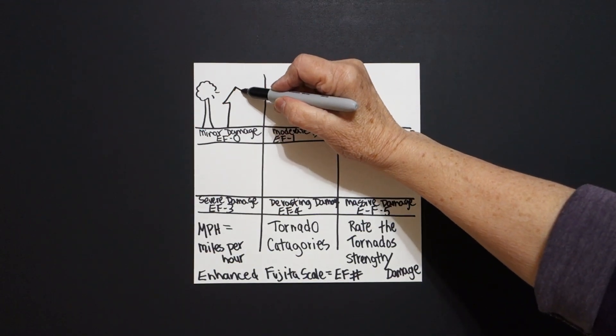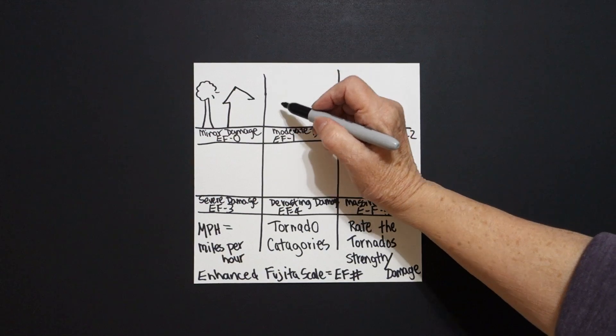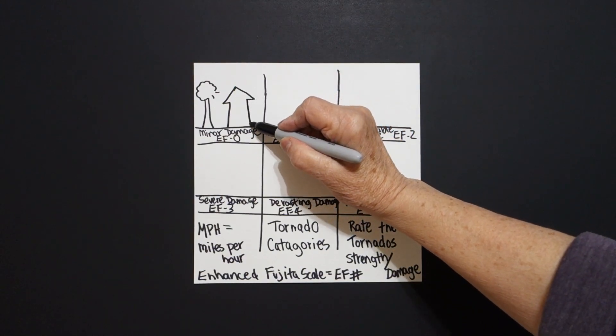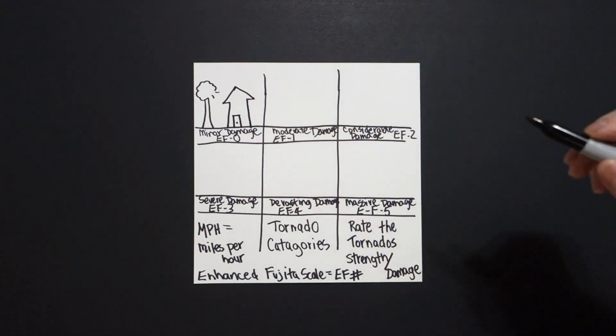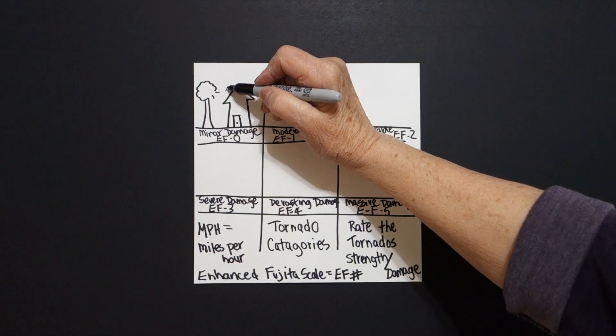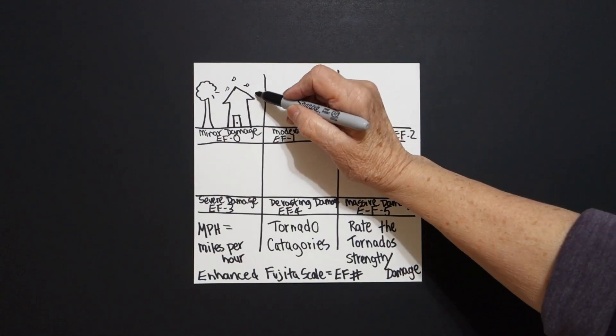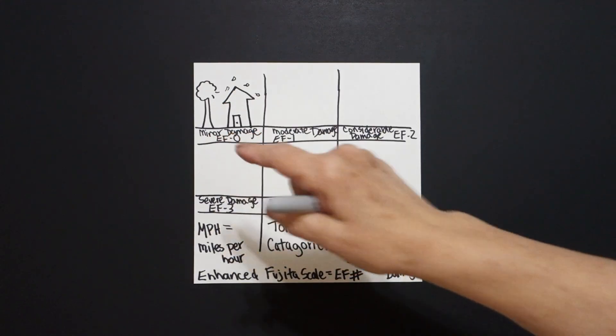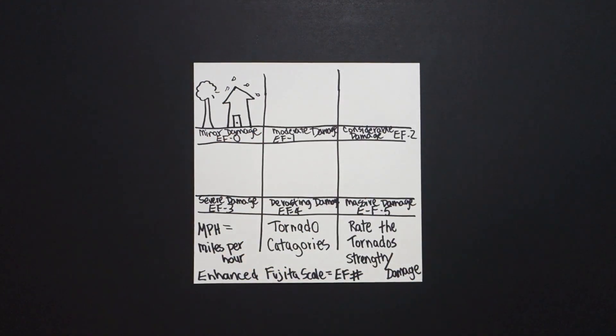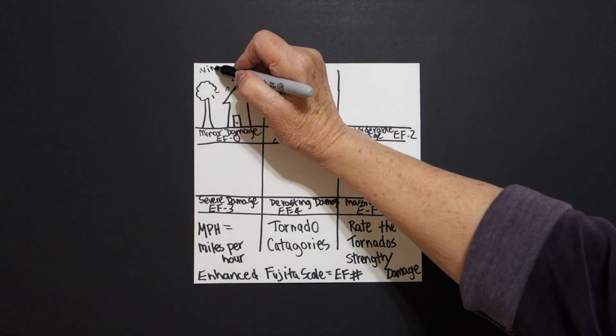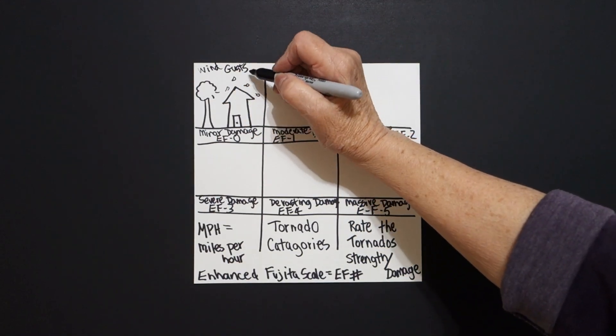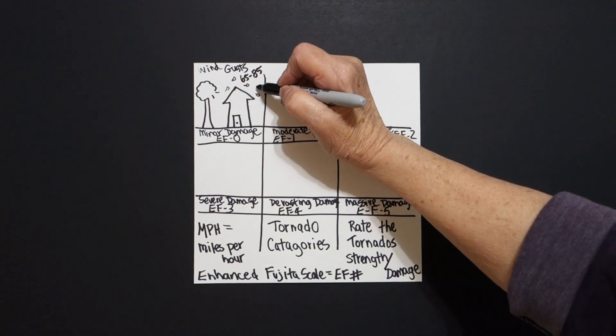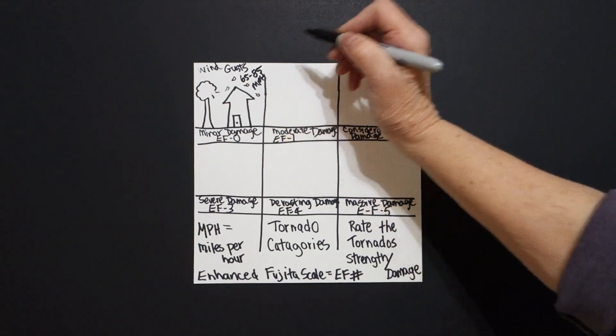Come back to the dot. Straight diagonal down, straight line in, straight line down, connect. Right here, straight line, straight line, straight line, and a dot. However, now just draw some little curved lines, connect. And this is minor damage from a tornado, EF-0. And this is when you have wind gusts 65 to 85 MPH, miles per hour.